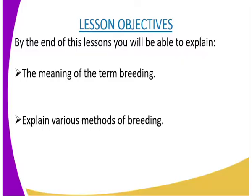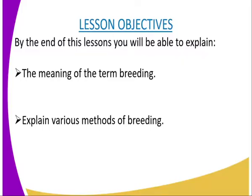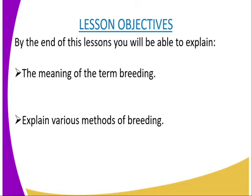On to the lesson objective. By the end of this lesson, you should be able to: number one, explain the meaning of the term breeding; and number two, explain various methods of breeding.